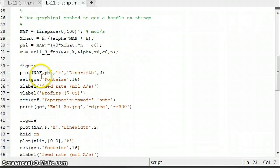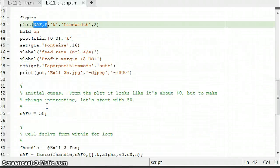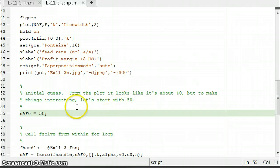So we're going to plot first the profits function as a function of N A feed, then the derivative of the profits function as a function of N A feed. Then we're going to take an initial guess, which is based on our graphical method. Of course, we could start at about 40, but to make things interesting, let's go ahead and start with 50.